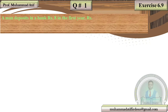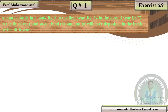A man deposits in a bank rupees 8 in the first year, 24 rupees in the second year, and rupees 72 in the third year, and so on. Find the amount he will have deposited in the bank by 5 years. A man is depositing money in a bank — 8 rupees in the first year, 24 in the second, 72 in the third. You have to find the total amount deposited in 5 years.